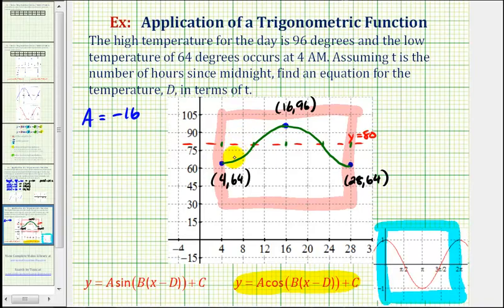We know our graph has been reflected because looking at our graph, the pattern is a minimum, midline, maximum, midline, minimum. And for the basic cosine function, it starts with a maximum, then midline, minimum, midline, maximum.